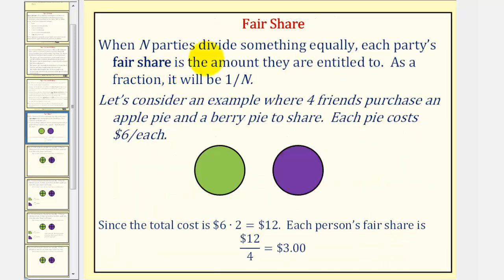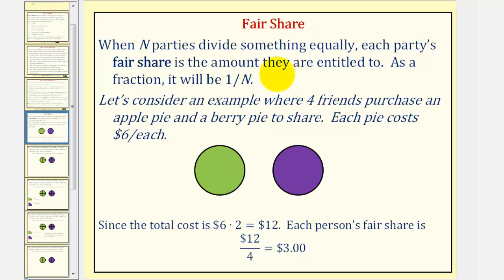So when n parties divide something equally, each party's fair share is the amount they are entitled to. As a fraction, it would be one-nth of the total value. So for example, if there are five people, each person's fair share would be one-fifth of the value.